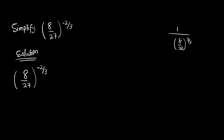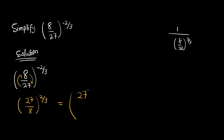To get rid of the negative, we reciprocate: we send 27 to the top and 8 to the bottom, cancelling out the negative. So we have 27 over 8 raised to the power 2 over 3. From here, we apply the power to each number separately: 27 raised to the power 2 over 3 divided by 8 raised to the power 2 over 3.